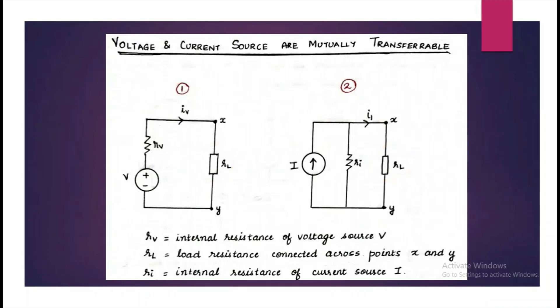From the first circuit, let's write the equation for I that goes to the load. The current IV is voltage V divided by Rv plus RL. Similarly, in the second circuit, the current I1 which goes into the load is capital I into Ri by Ri plus RL.